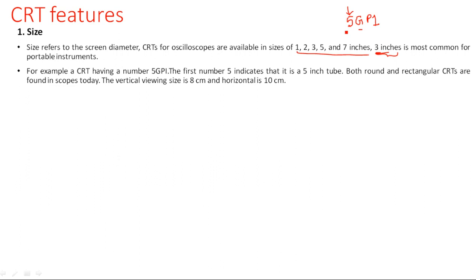If any CRT is designated with a number like 5GP1 or 5GP11, the first number indicates the size of the screen in inches. Some screens are available in a round shape and some in a rectangular shape. In laboratories, we generally use rectangular shapes, while round shapes are preferred in radar or navigation communications to locate objects — for example, PPI displays.